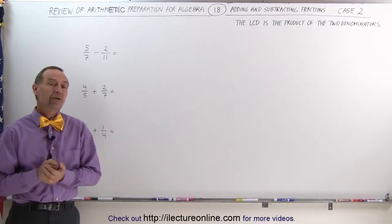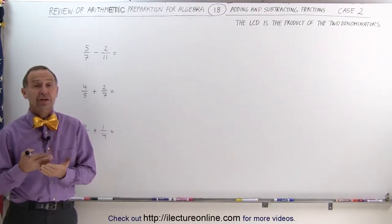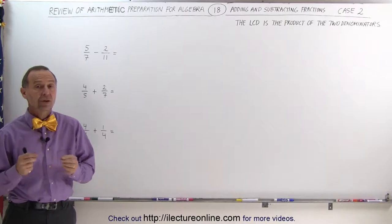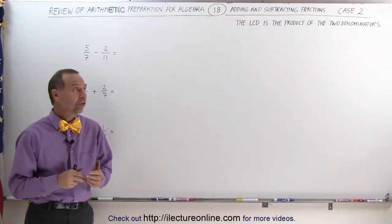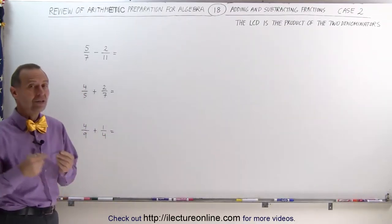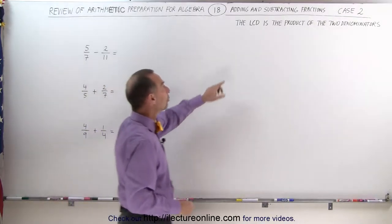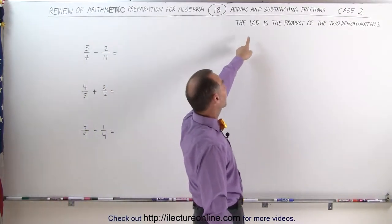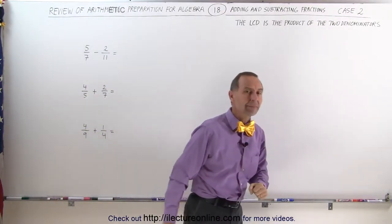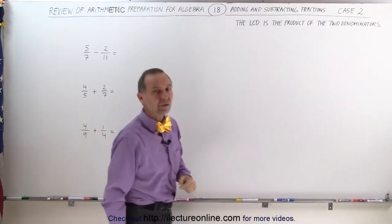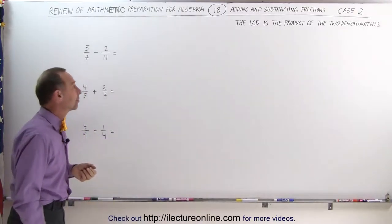Welcome to Electron Line. This is our second video on how to add fractions when the denominators are not the same, showing case two. Case two is the case where the lowest common denominator is going to be the product of the two denominators, and there are two reasons why that may be the case.